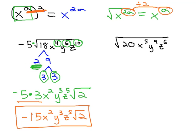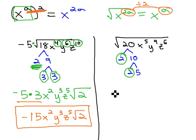Looking at the second example here, the square root of 20, x to the 5th, y to the 9th, z to the 6th. We'll first look at the 20 by factoring it, 2 times 10, and finally 2 times 5. We see we have a pair of 2's and so that will allow a 2 to come outside of the radical.